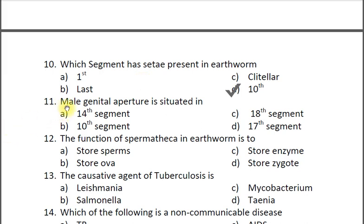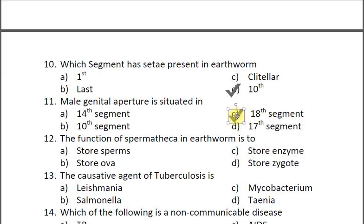Question eleven: Male genital aperture is situated in — A 14th segment, B 10th segment, C 18th segment, D 17th segment. The question refers to the earthworm. The correct answer is option C — it is present in the 18th segment.